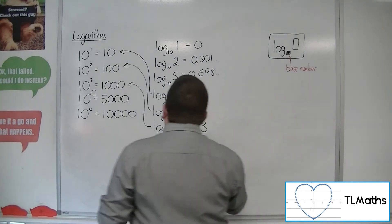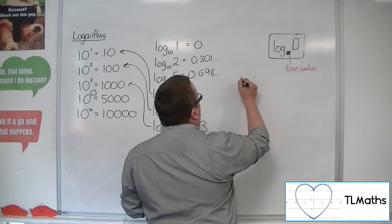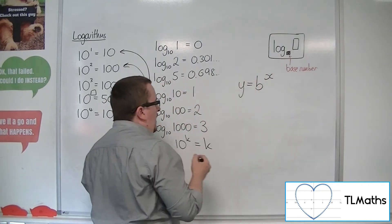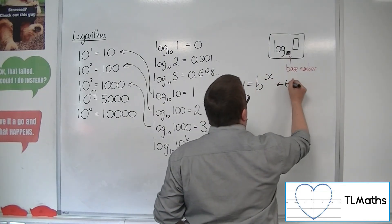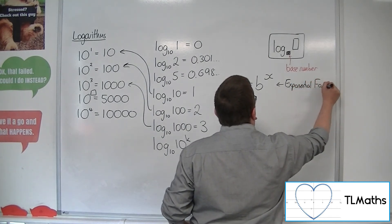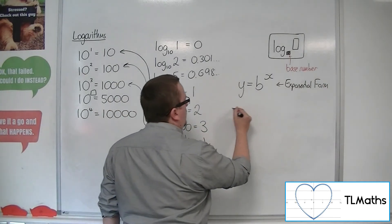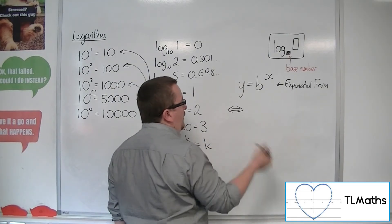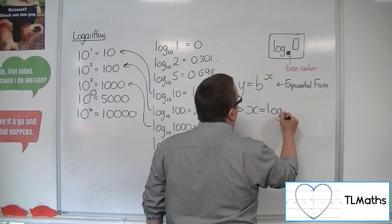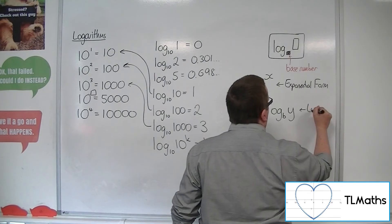So what we can say is that if we have y equals b to the x — this is what we refer to as exponential form — then to convert that in either direction, if and only if x is equal to log base b of y. And this is the logarithmic form.